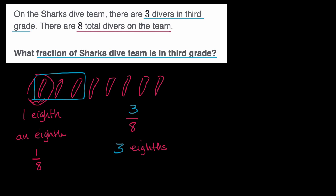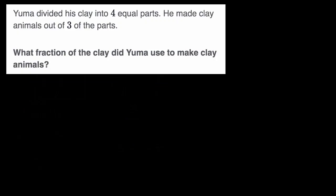Let's do another example. Here we are told Yuma divided his clay into four equal parts. He made clay animals out of three of the parts. What fraction of the clay did Yuma use to make clay animals? So once again, pause this video and think about it.